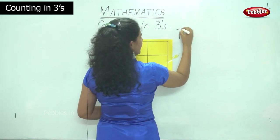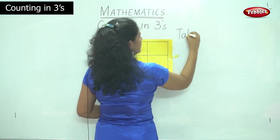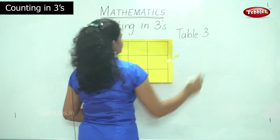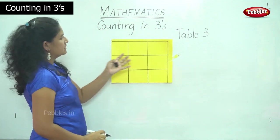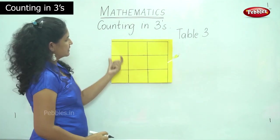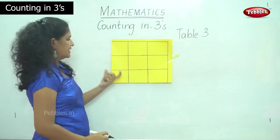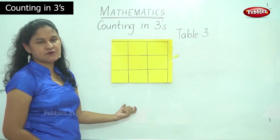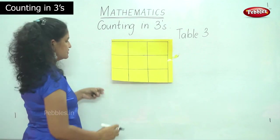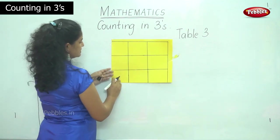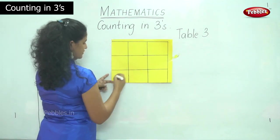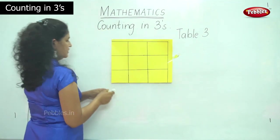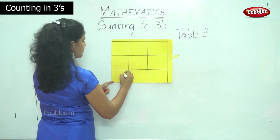I am going to teach you an easy method of learning table 3. We have a grid — a 3 by 3 grid up and down. We start by writing the numbers from 1 to 9 from the bottom.